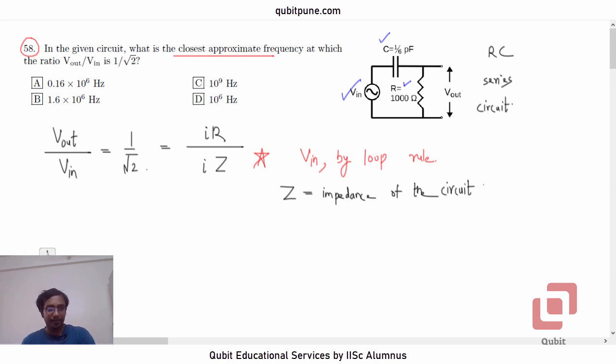So, we have correctly obtained Vin as IZ and Vout as IR. So, current I will go and we will get the relation root 2 R equal to Z.